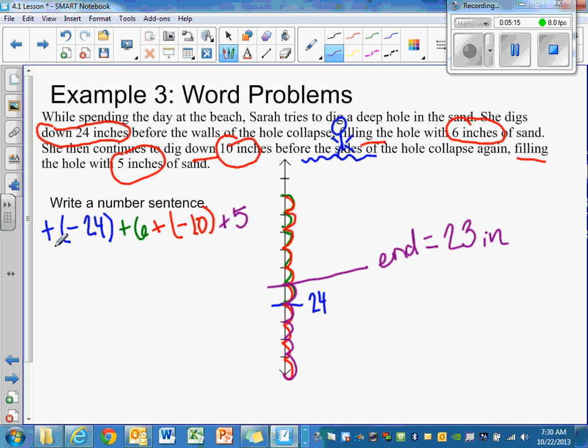So writing our number sentence here, we have plus negative 24 plus 6 plus negative 10 plus 5 equals negative 23. That would be your number sentence. Thank you. I hope this helped you with your homework.